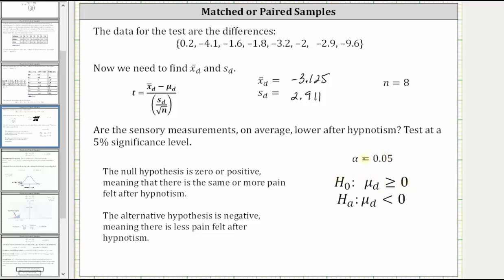And we know alpha is equal to 0.05, which is 5% as a decimal. So the null hypothesis is zero or positive, meaning that there is the same or more pain after hypnotism. And the alternative hypothesis is negative, meaning there is less pain after hypnotism.